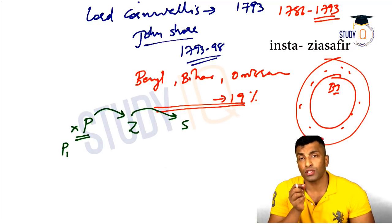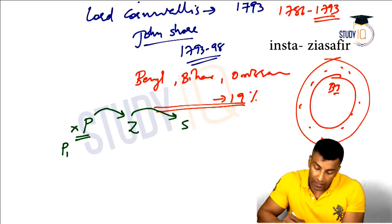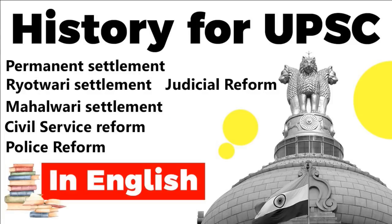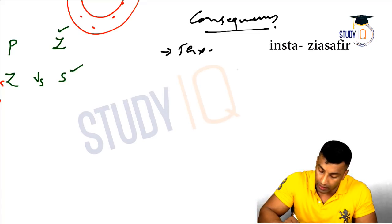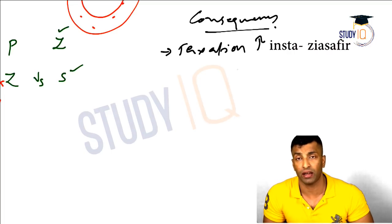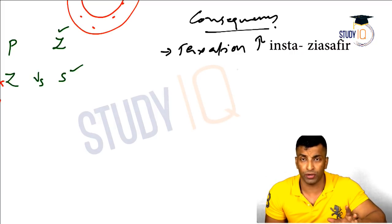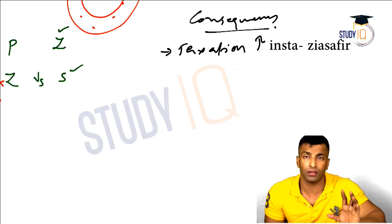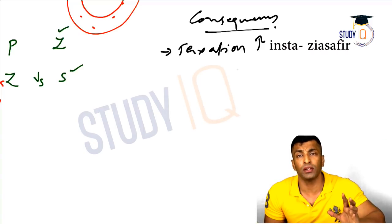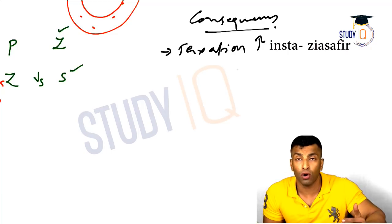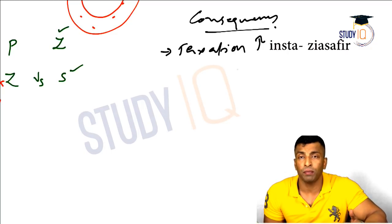The ownership of the zamindar is also not absolute. The taxation was fixed around 1790 and was actually very high — around 50 to 60% of the total produce. But when you factor in the seed cost, fertilizer cost, and other investment inputs, it effectively comes to around 80 to 90% of the total produce.